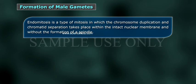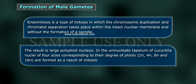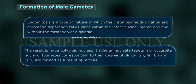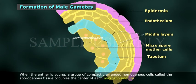Endomitosis is a type of mitosis in which chromosome duplication and chromatid separation takes place within the intact nuclear membrane and without the formation of a spindle. The result is a large polyploid nucleus. In uninucleate tapetum of Cucurbita, nuclei of four sizes corresponding to their degree of ploidy — 2N, 4N, 8N, and 16N — are formed as a result of endomitosis.